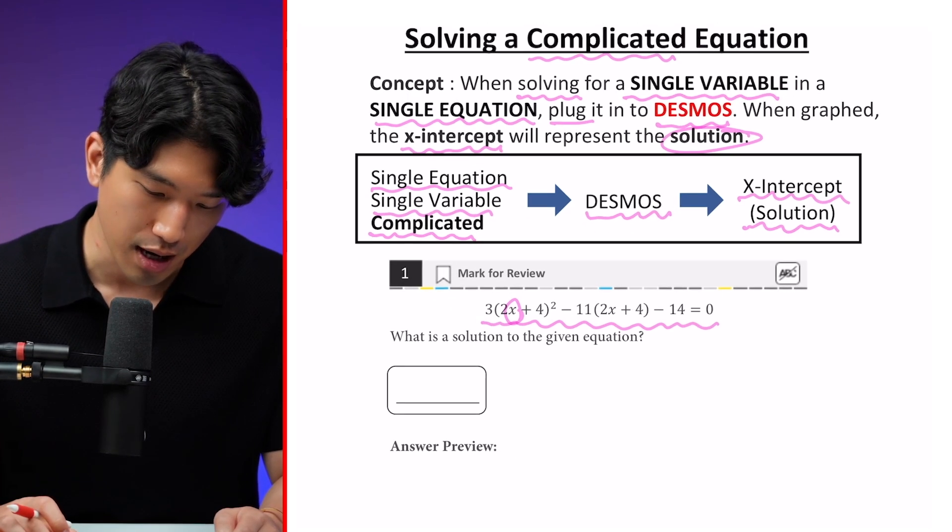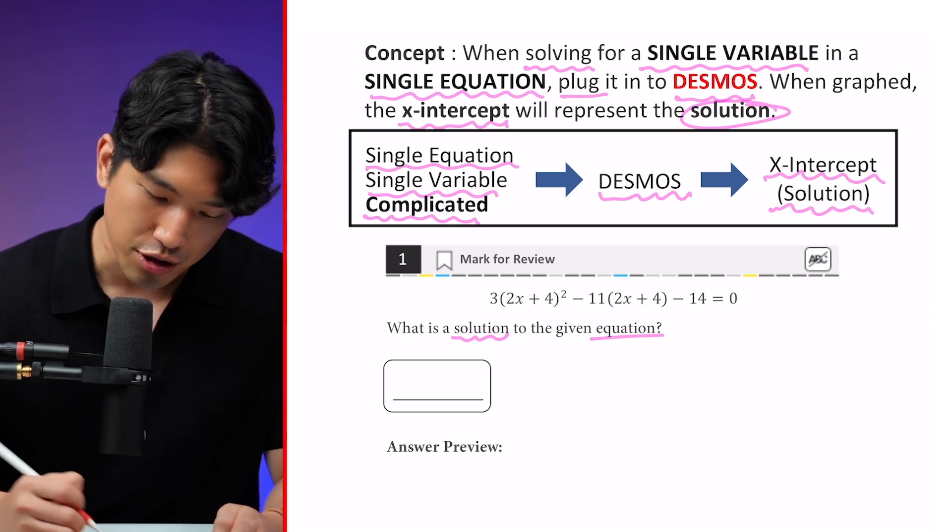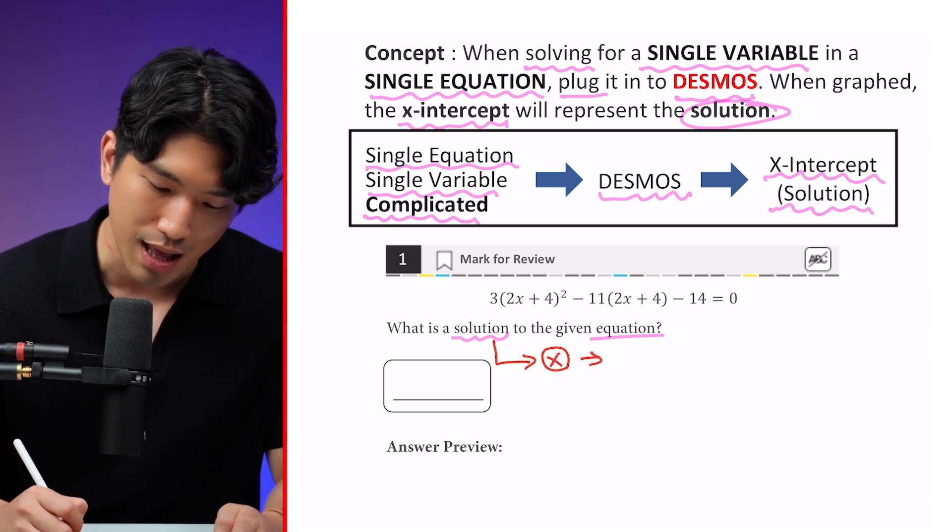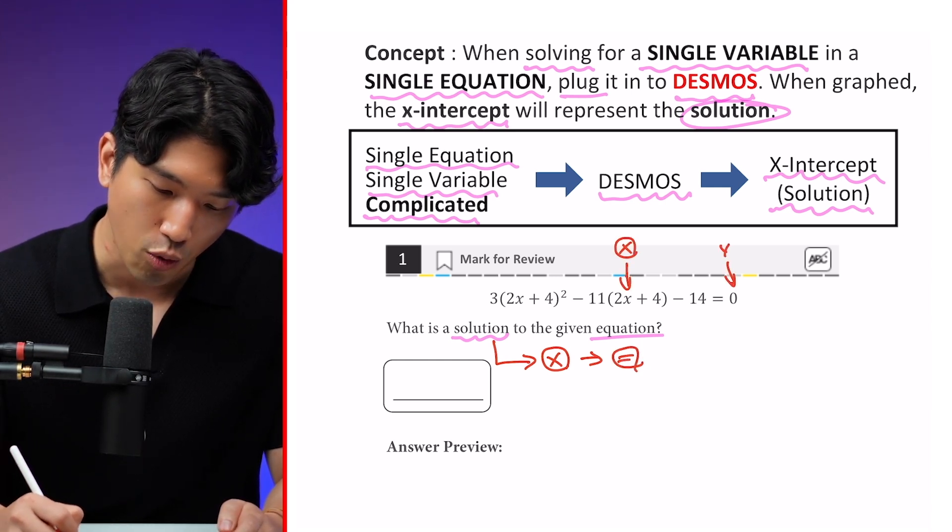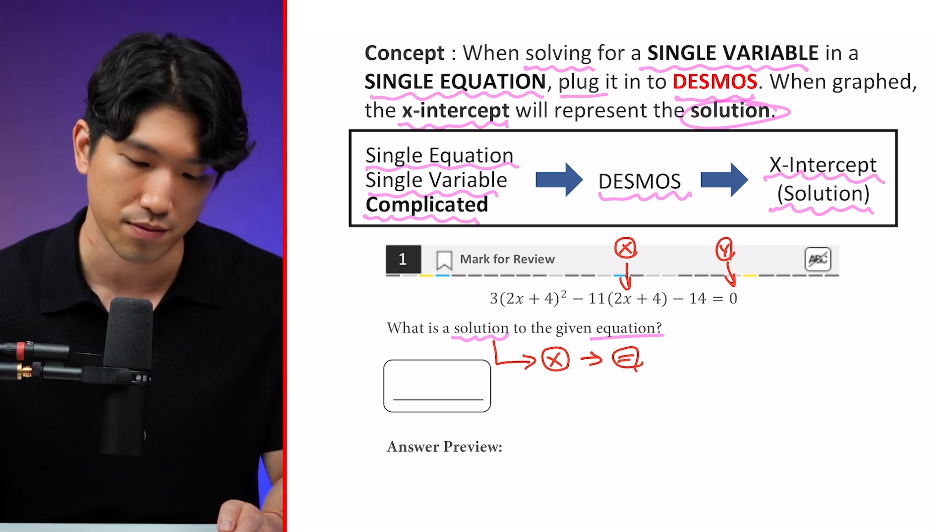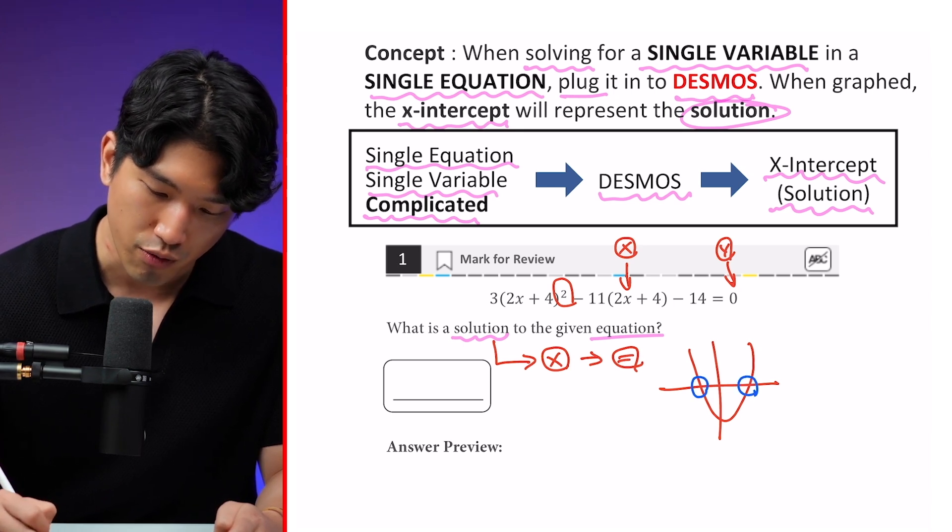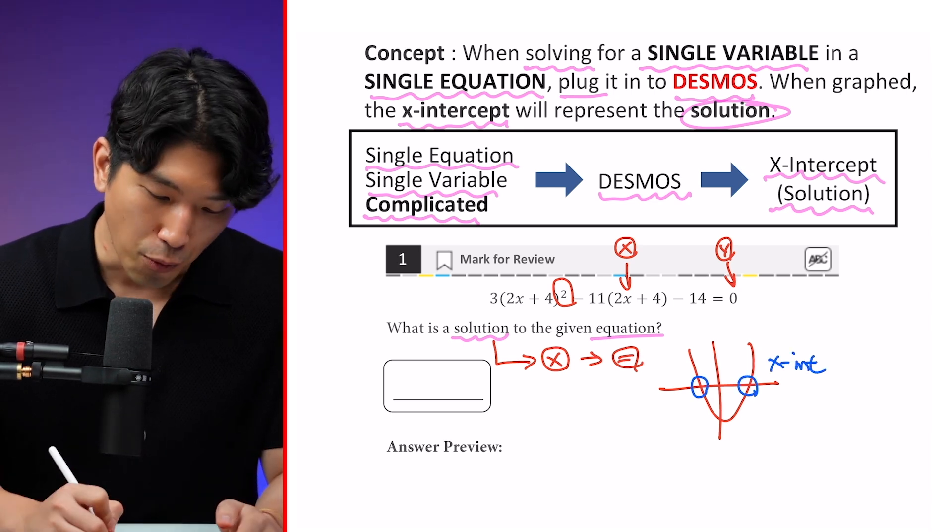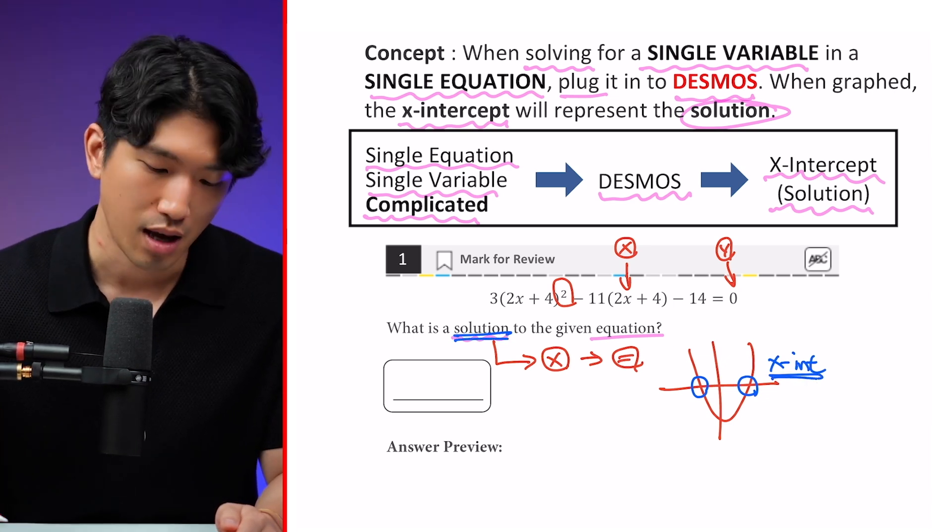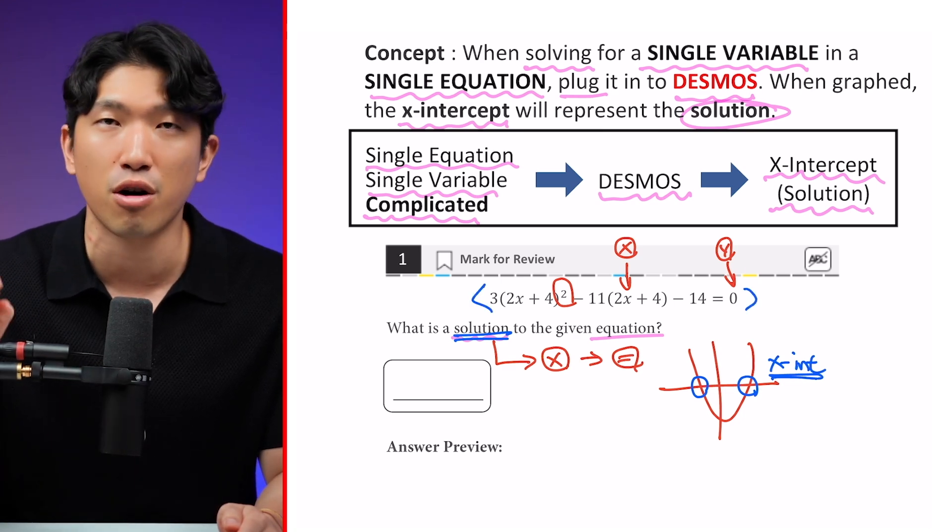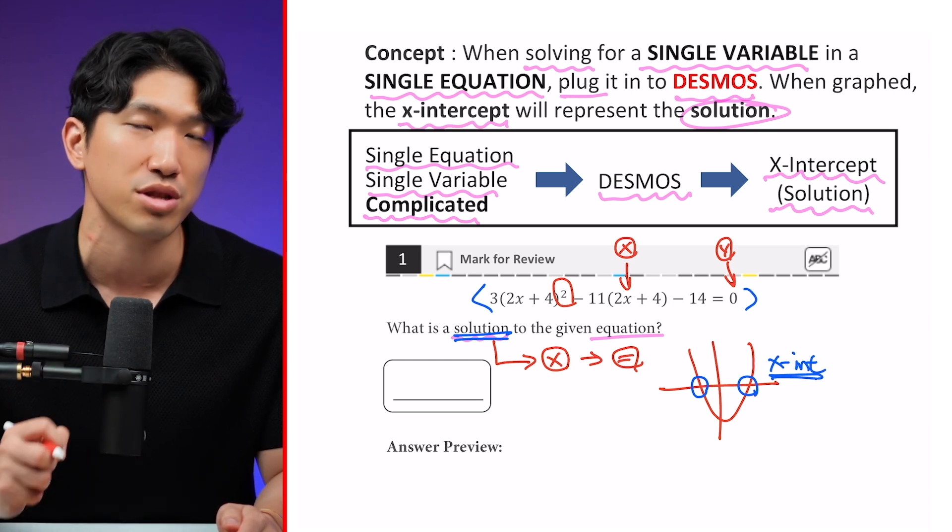So here is a quick example. So the question is asking, what is a solution to the given equation? By definition, solution is referring to the value of x that makes our equation true. And in our case, we're looking for the value of x that makes our y value equal to zero. And we can try to expand this out and factor it out and do a whole bunch of math, but we can simply just graph it out on Desmos and go to the x-intercepts.